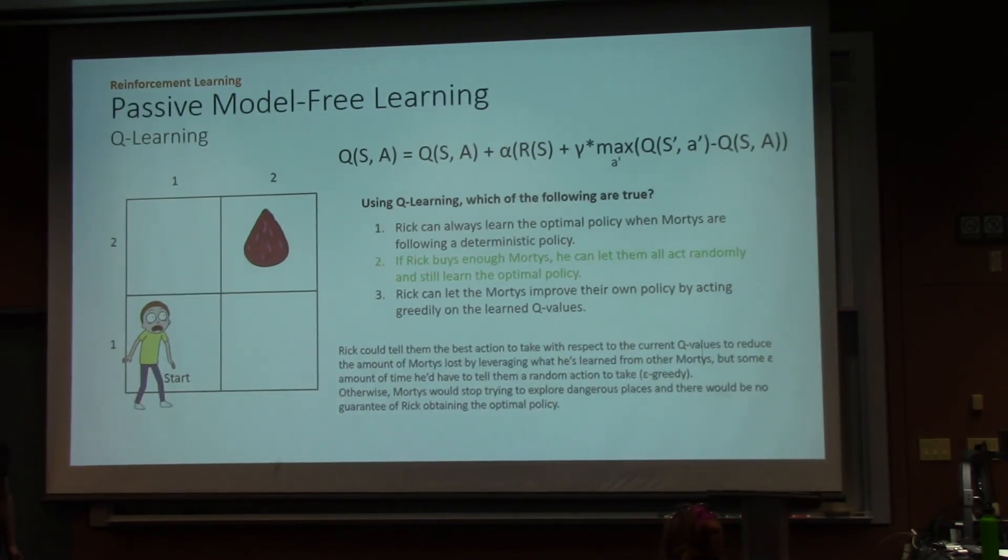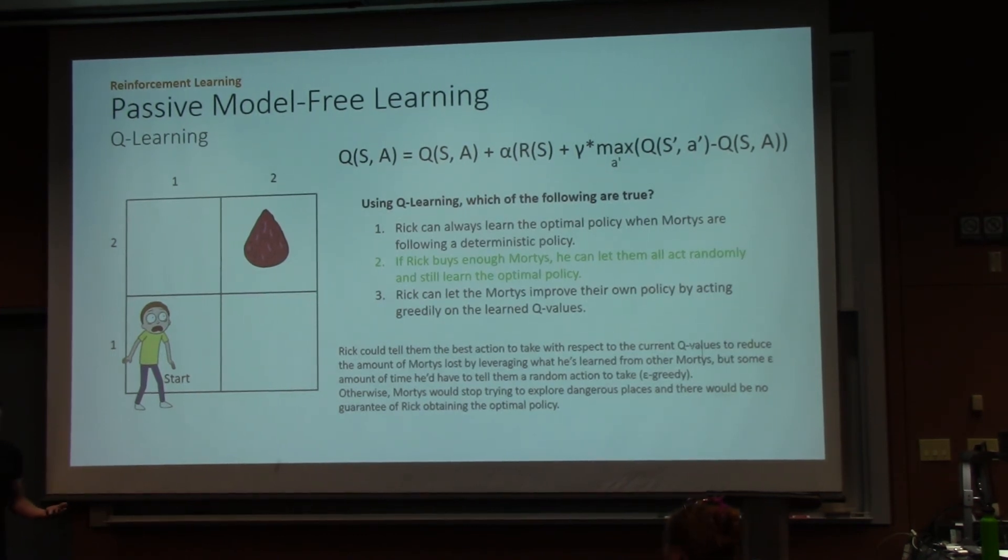The correct is, in fact, number two, which is that if Rick has an infinite amount of Mortys, he can just let them follow a random policy and he will still converge to the optimal policy. But, this would be expensive. Because we're now in a place where we can learn how to act better. But doing this, we're not going to be utilizing that information.